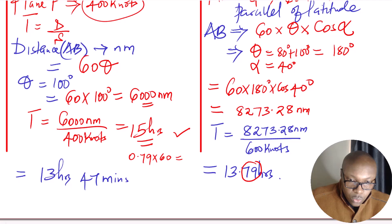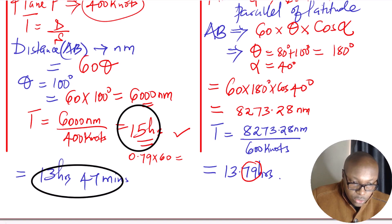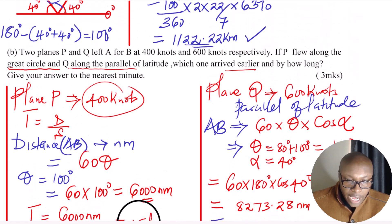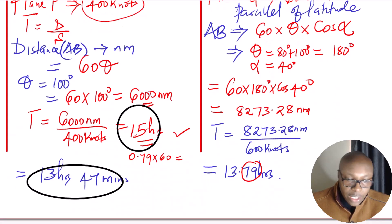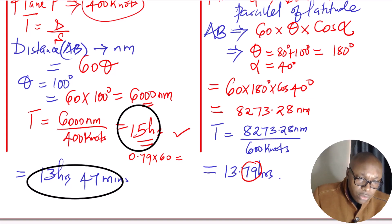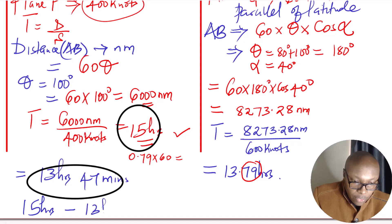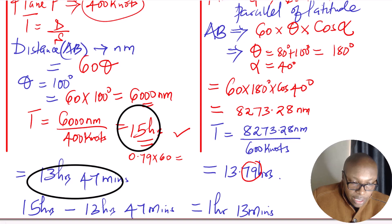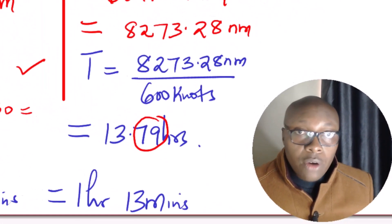Now we have both times: plane P took 15 hours, and plane Q took 13 hours and 47 minutes. The one that arrived earlier is the one that used the least time — that is plane Q, which took 13 hours 47 minutes, while P used 15 hours. To find by how long, we subtract: 15 hours minus 13 hours 47 minutes gives 1 hour and 13 minutes. So plane Q arrived earlier by 1 hour and 13 minutes.